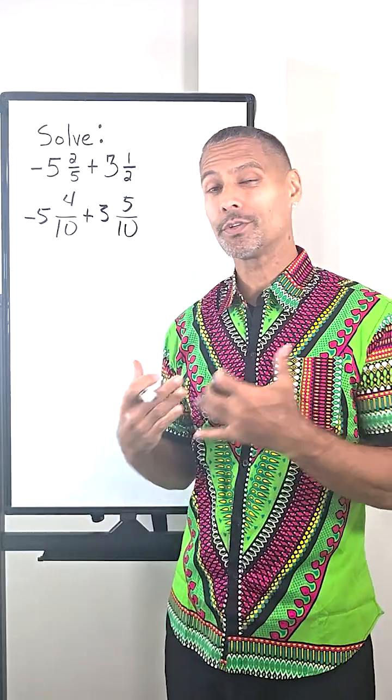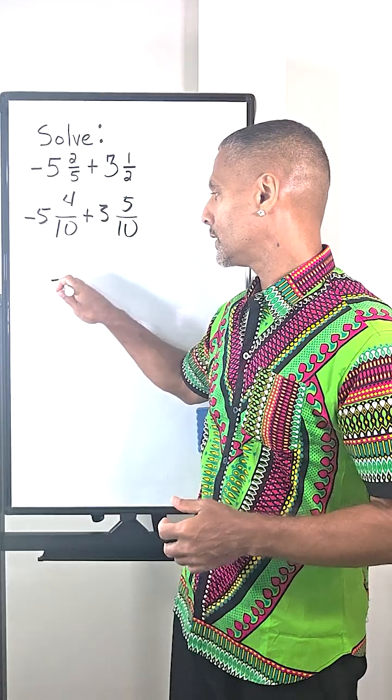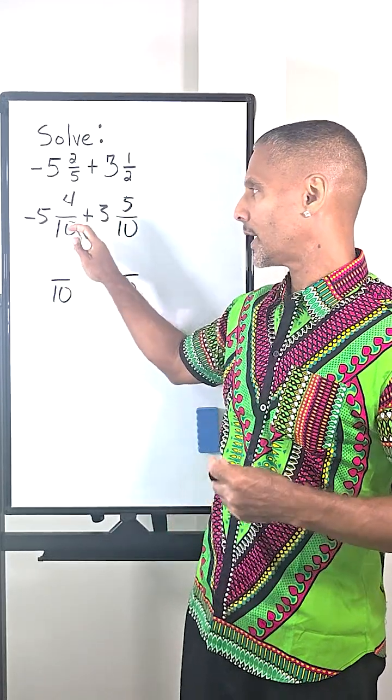All right, next, what we're going to do is convert each one of these mixed numbers into improper fractions. So we're going to keep our denominators the same. And then we just multiply 10 and five.